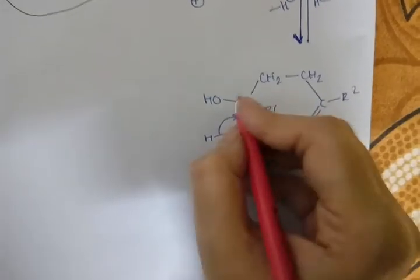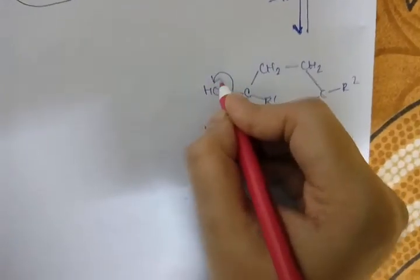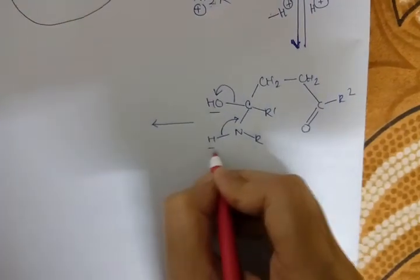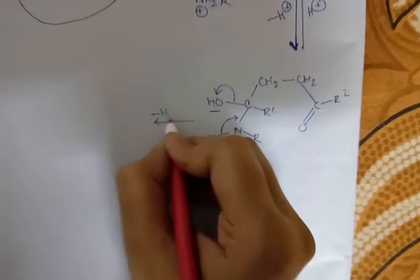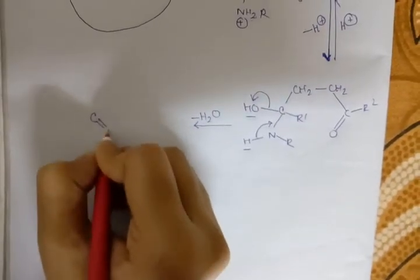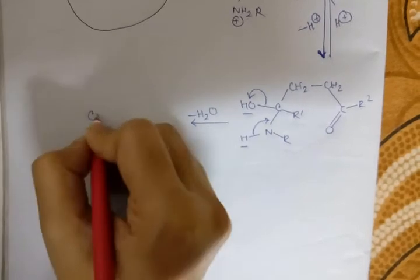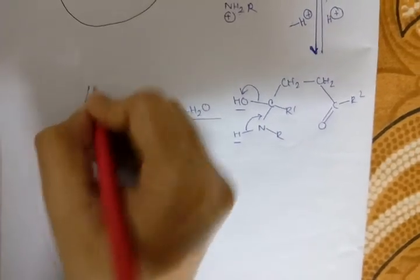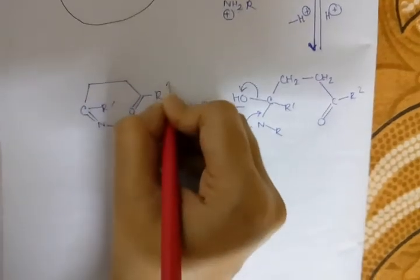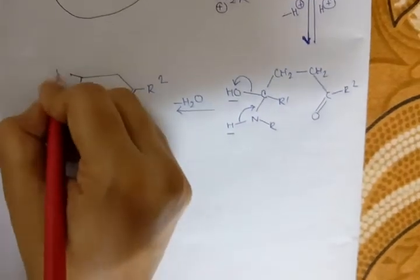An imine will form. This hydrogen will rotate and HO minus will release. H minus and H+ form H2O, hence minus H2O, and give an enamine compound: N-R, R1-CH2-CH2-CO-R2. Now here, enamine-imine tautomerism will occur.